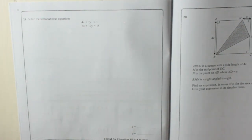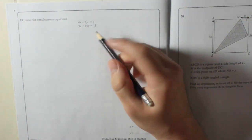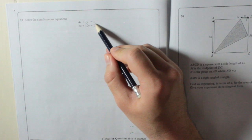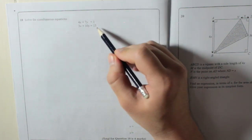Question 18. Simultaneous equations, everyone's favorite topic. So you've got 4x plus 7y equals 1, and 3x plus 10y equals 15.